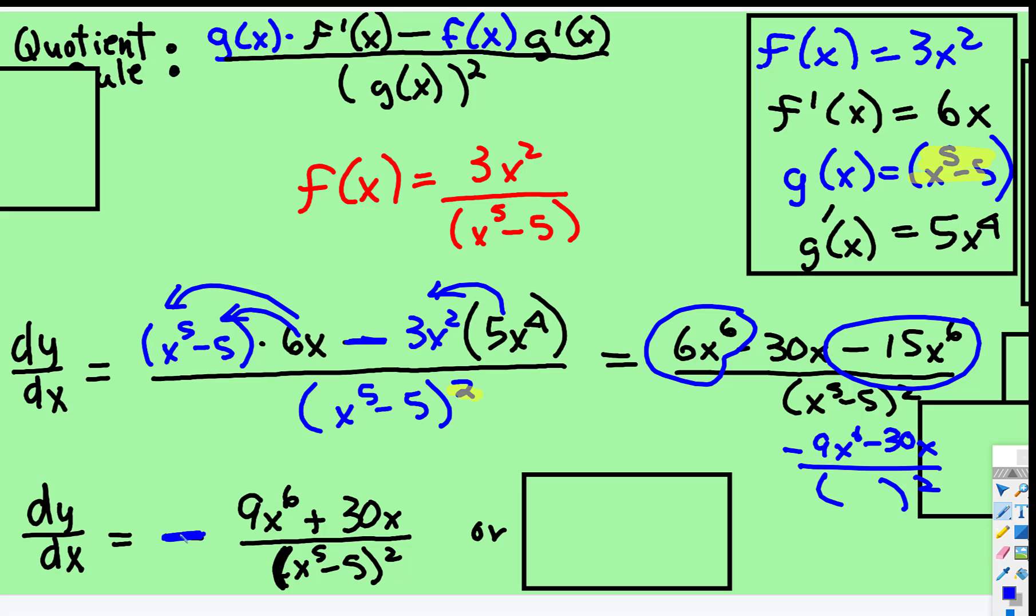since they're both negative, bring the negative sign out front. And then just write that as a fraction. 9x to the sixth plus 30x all over the expression x to the fifth subtract 5 squared.